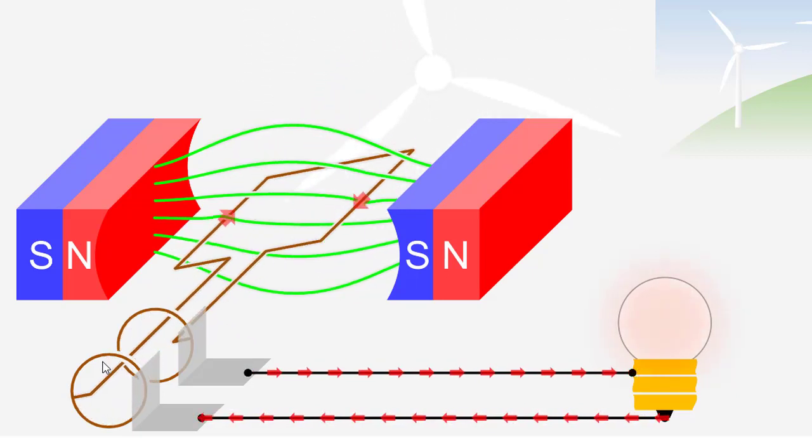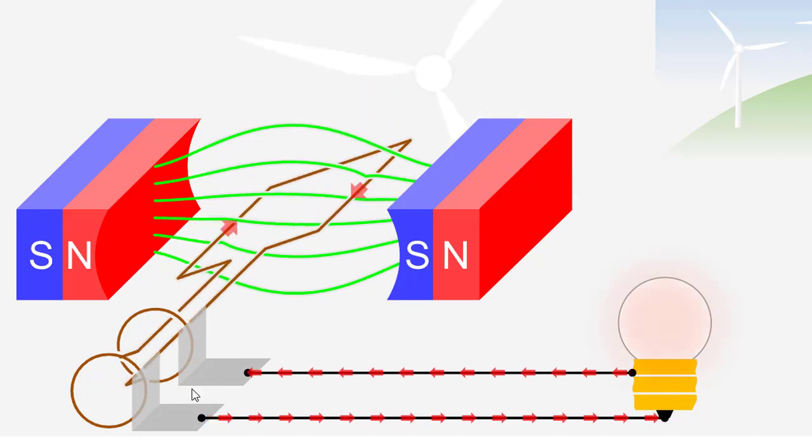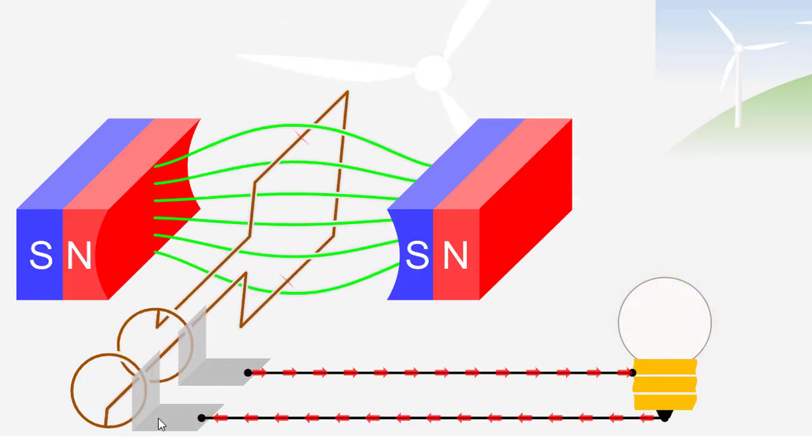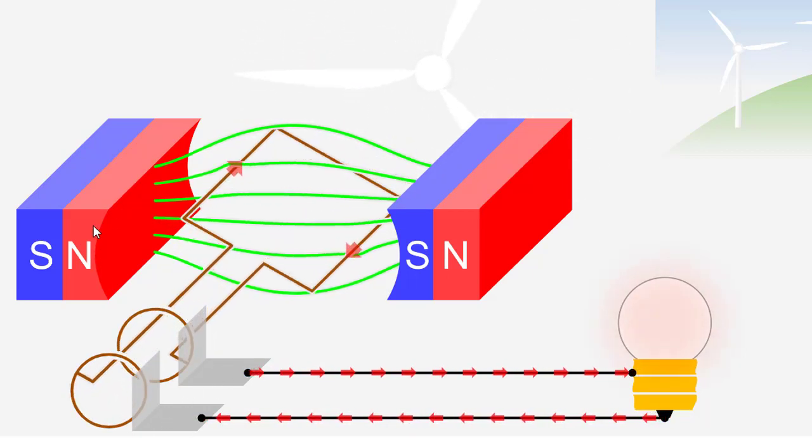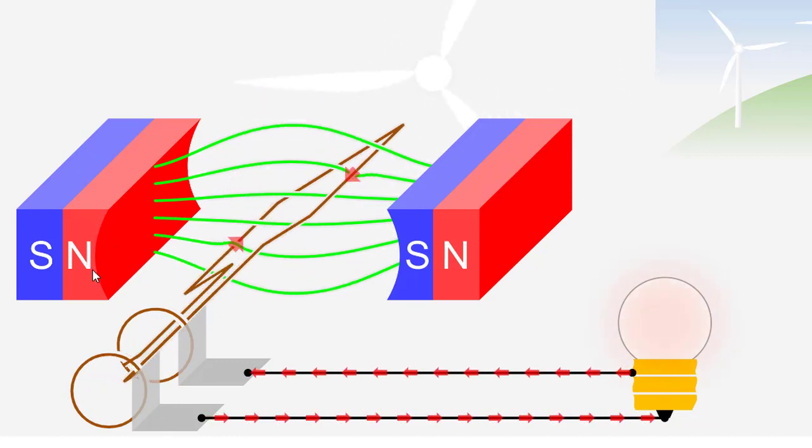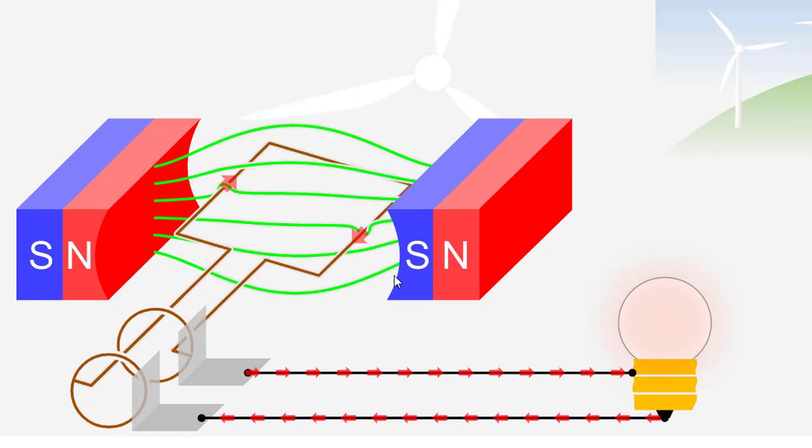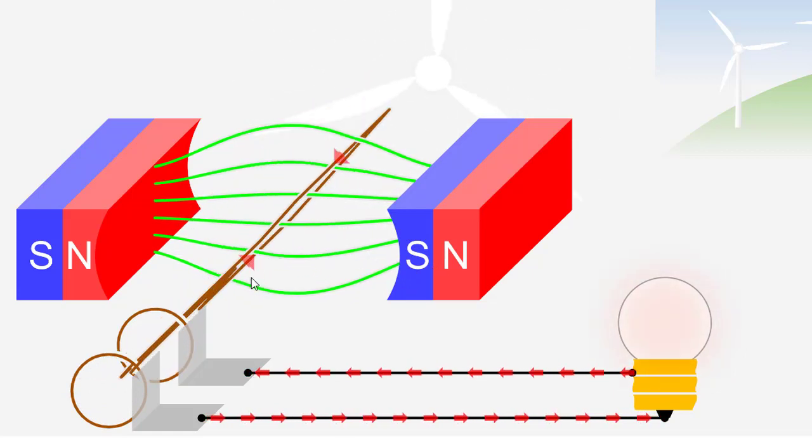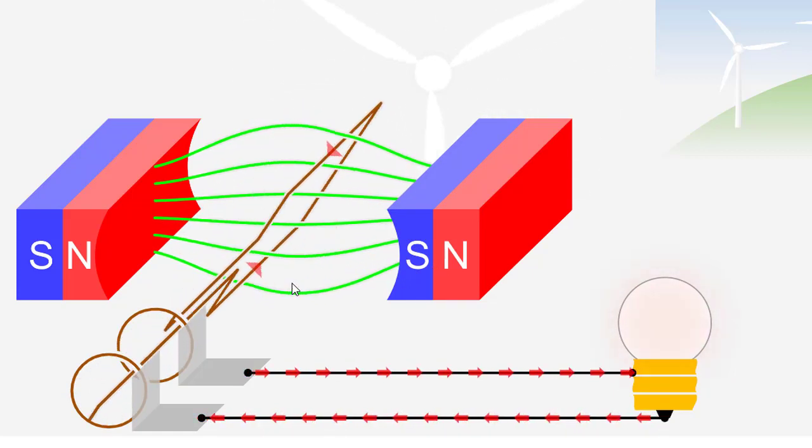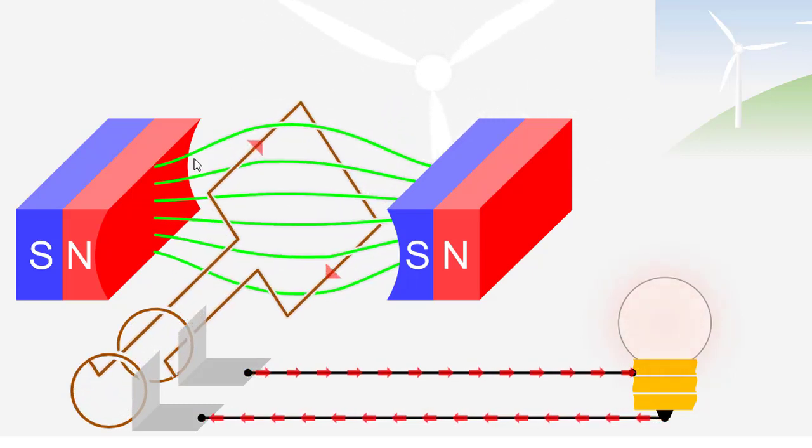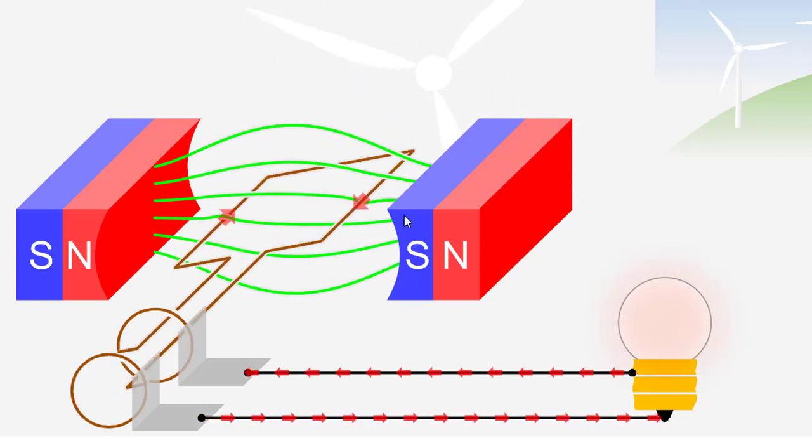These two are the slip rings and these two are the brushes. One magnet is on north pole side and the second magnet is on south pole side. The conductor is made from aluminum or copper. These are the magnetic flux.